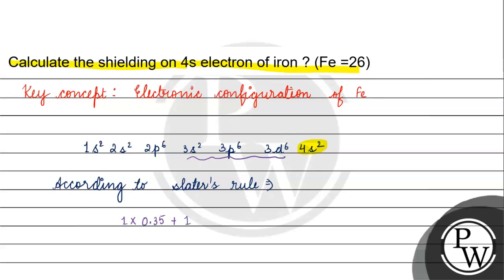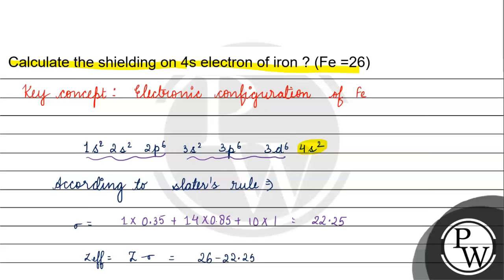We have 14 electrons multiplied by 0.85, and then we add the rest of the electrons by a factor of 1, giving us 22.25. Then we subtract from the atomic number: 26 minus 22.25 equals 3.75.